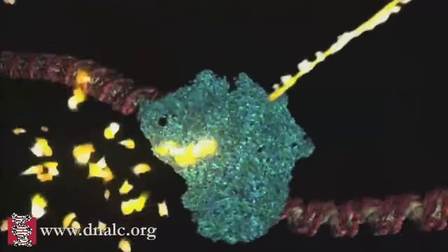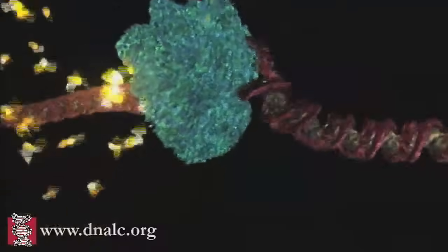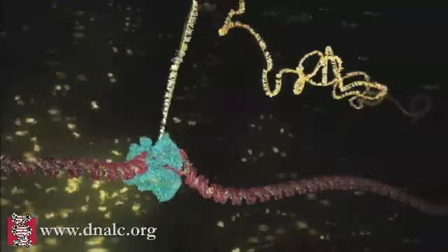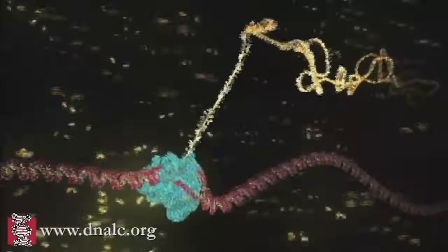The subunits can be seen here entering the enzyme through its intake hole, and they are joined together to form the long messenger RNA chain snaking out of the top.